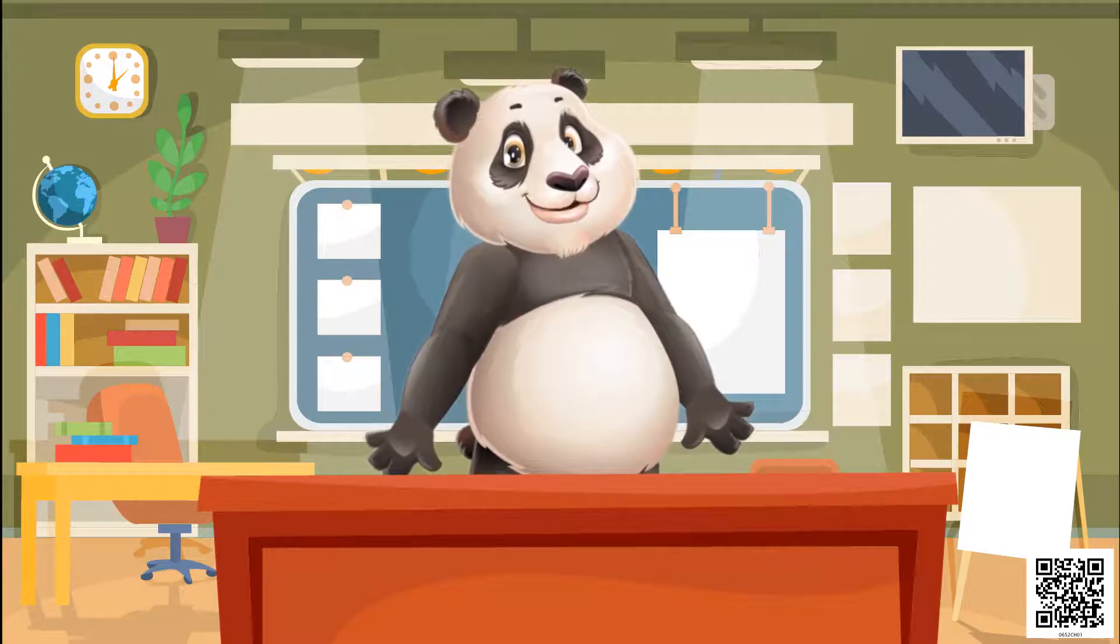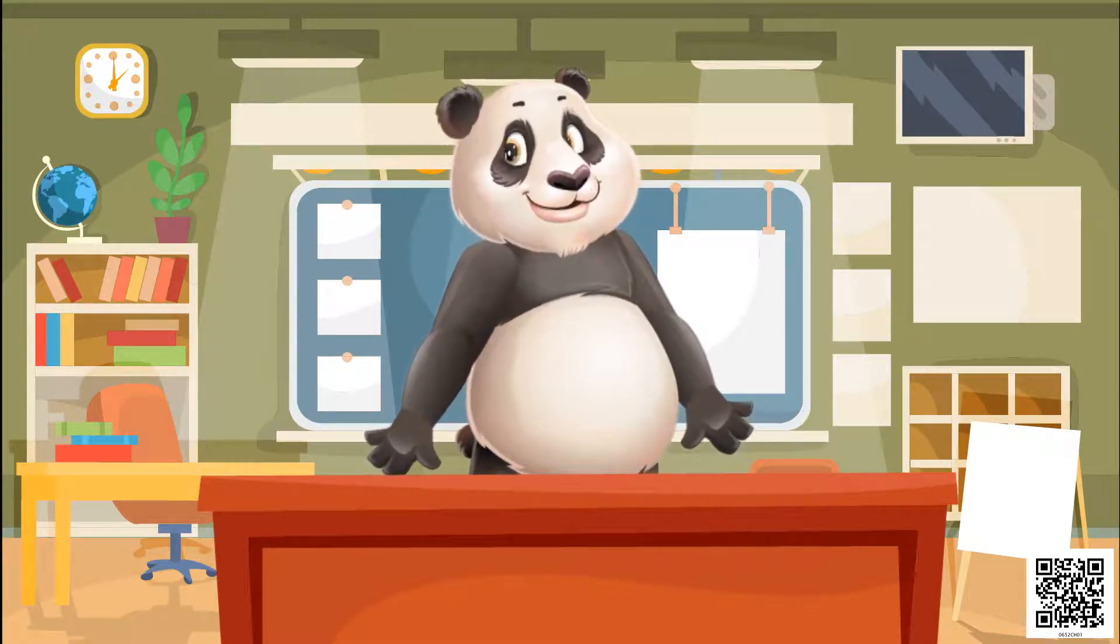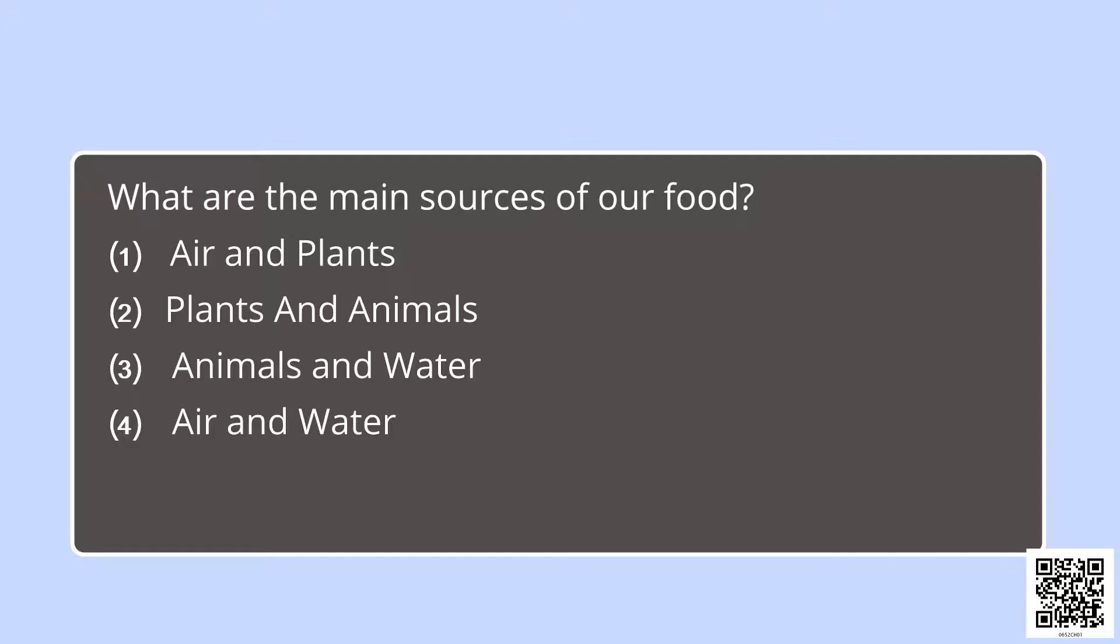Now I will ask you some questions. Are you ready for it? Here we go. First question: What are the main sources of our food? Option one: air and plants. Option two: plants and animals. Option three: animals and water. Option four: air and water. Yes, the correct answer is plants and animals.